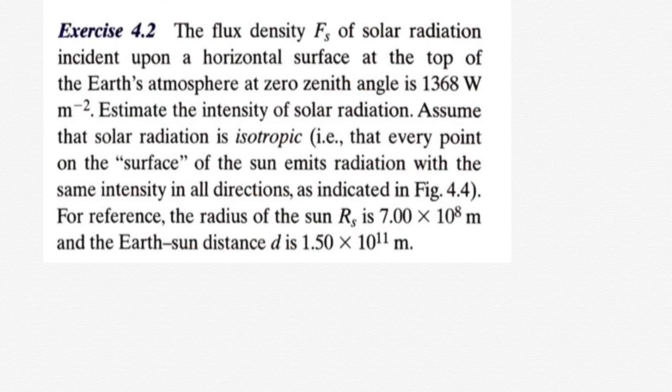Estimate the intensity of solar radiation. Assume that solar radiation is isotropic, which means that every point of the surface of the Sun emits radiation with the same intensity in all directions. For reference, the radius of the Sun RS is 7×10⁸ meters, and the Earth-Sun distance d is 1.5×10¹¹ meters.